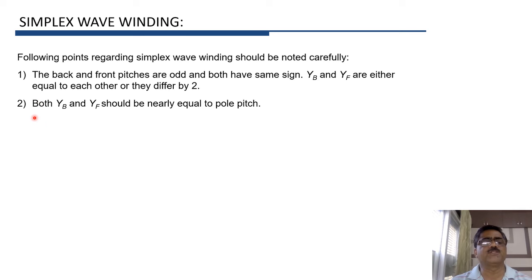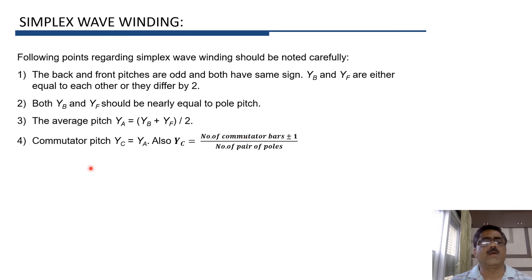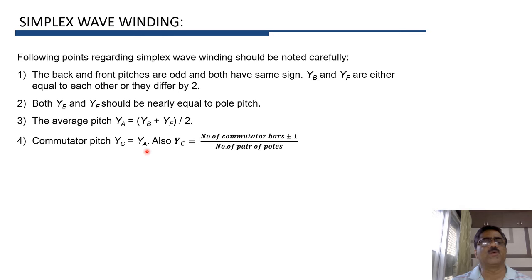Both YB and YF should be nearly equal to the pole pitch — this is required to obtain maximum induced EMF. The average pitch YA is given by (YB + YF) / 2. The commutator pitch YC is given by (number of commutator bars ± 1) / number of pairs of poles. In simplex wave winding, YC is equal to YA.